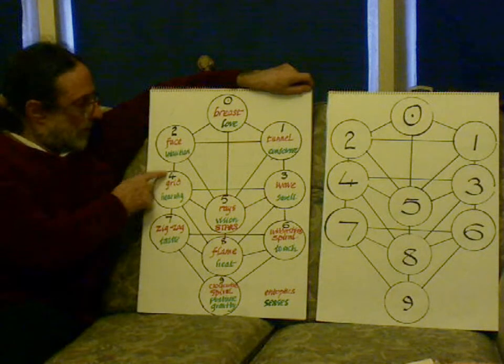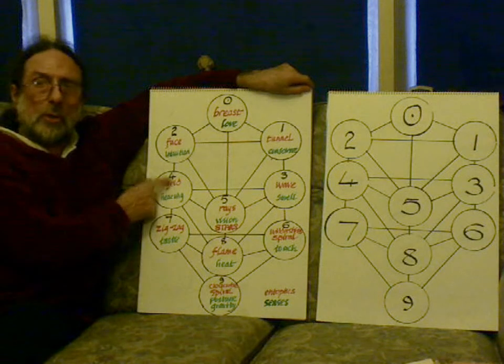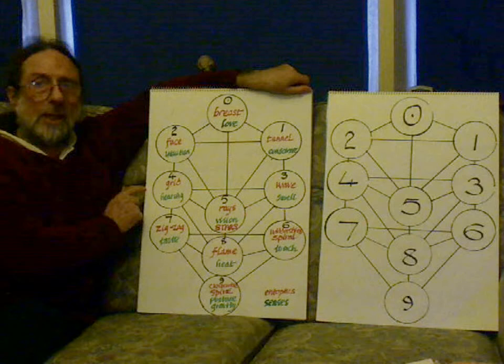And then we have a clock, the four, a clock, the hands of the clock, which is a grid or a checkerboard Entoptic, the chessboard Entoptic, any pattern of grids and squares.